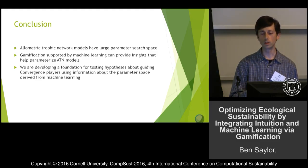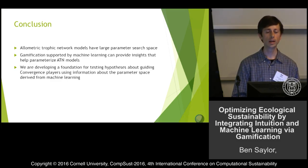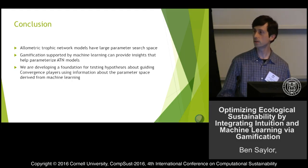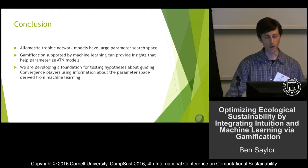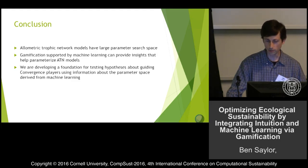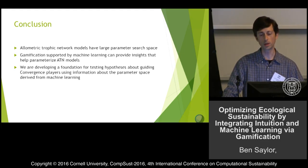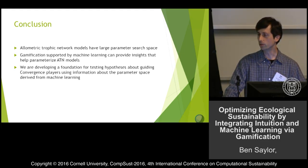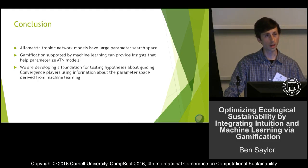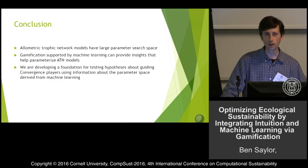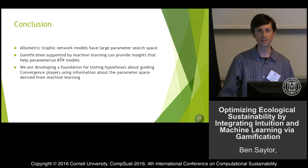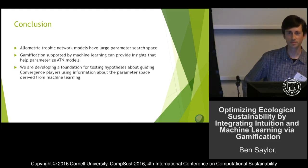To sum up: ATN models have a large parameter space due to all the species and all the parameters for the links between species. We believe that gamification supported by machine learning can provide insights to help us parameterize these models. We're developing a foundation for testing hypotheses about guiding players using information about the parameter space derived from machine learning, and hope to gain insights for both education and research.